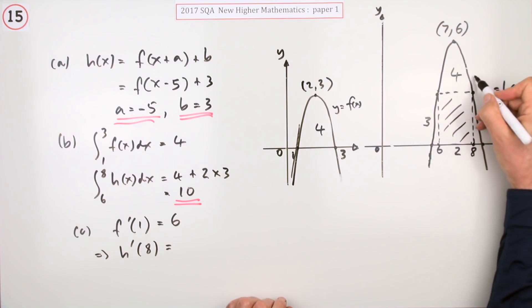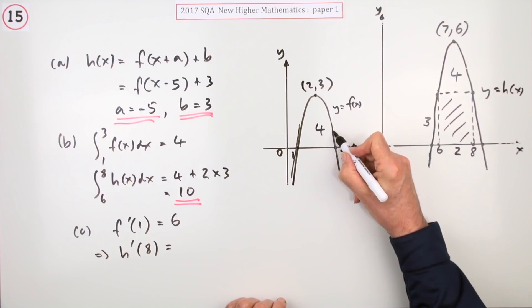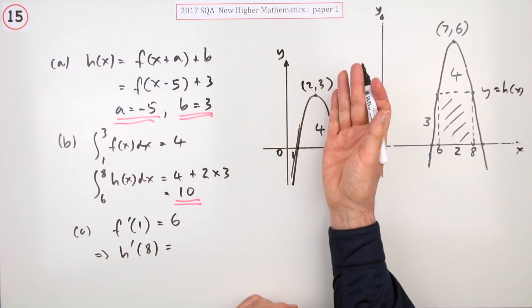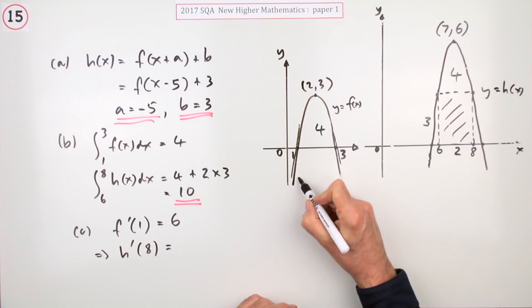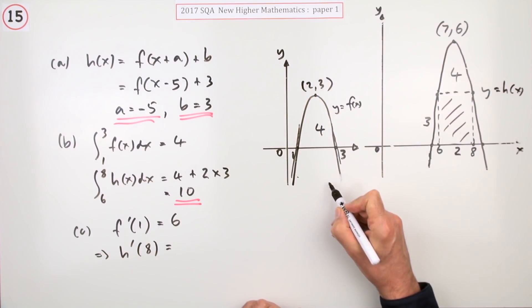So the gradient here corresponds to this gradient, and since it's symmetrical about a vertical axis, if it's one along, six up in this side, it must be one along but six down on that side. So it's negative 6.